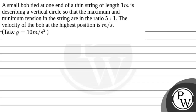Hello. Let's read the question. The question says that a small bob tied at one end of a thin string of length 1 meter is describing a vertical circle so that the maximum and minimum tension in the string are in the ratio 5 is to 1. The velocity of the bob at the highest position is dash meter per second.